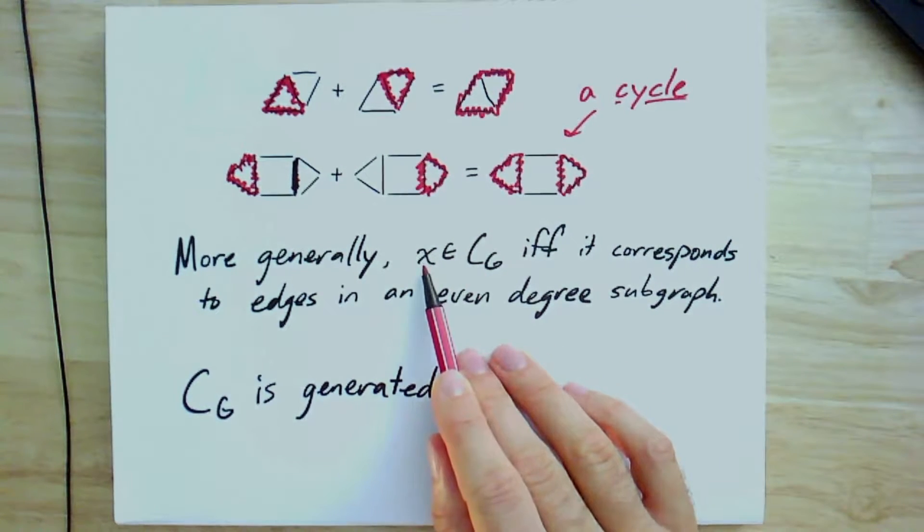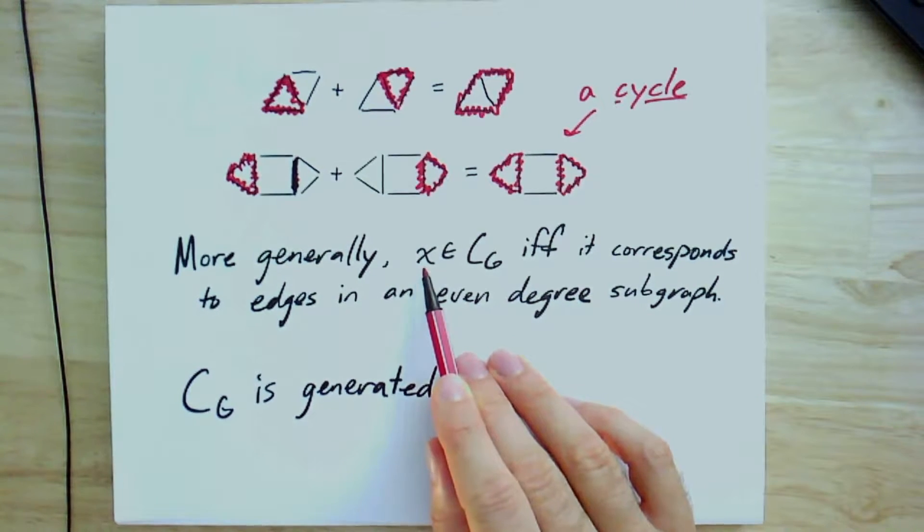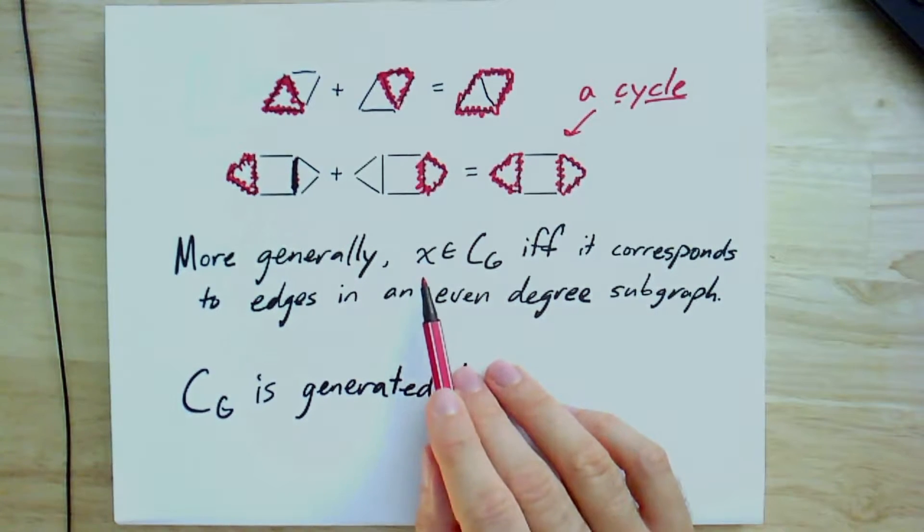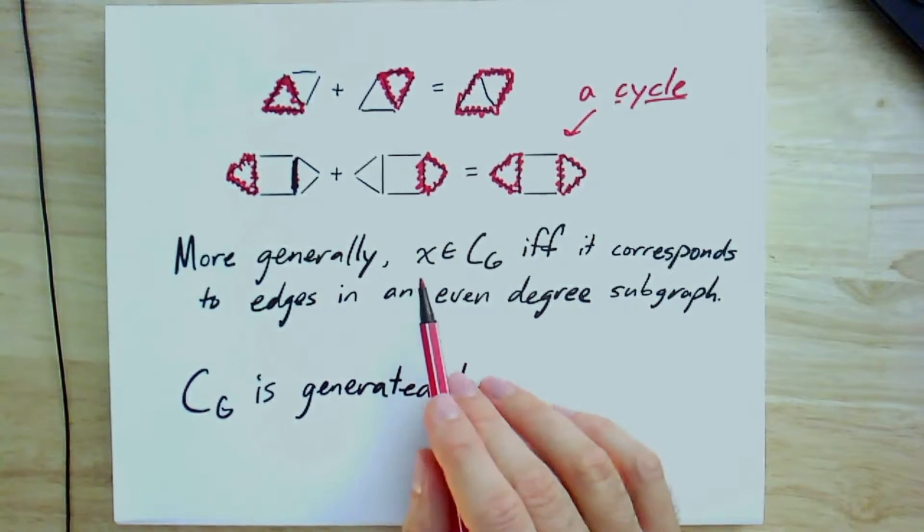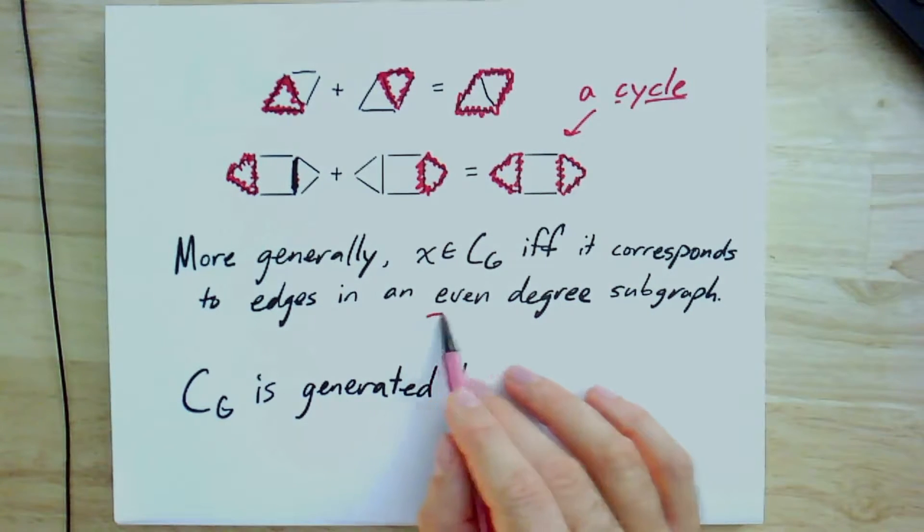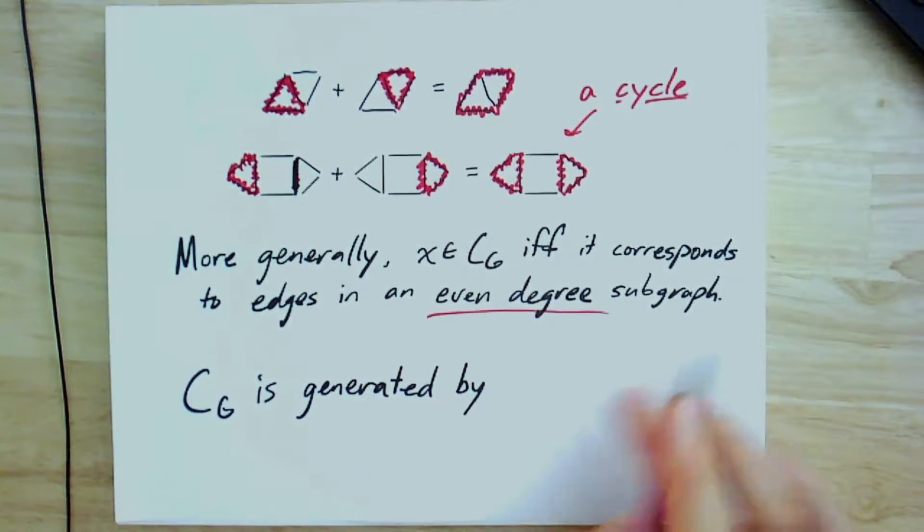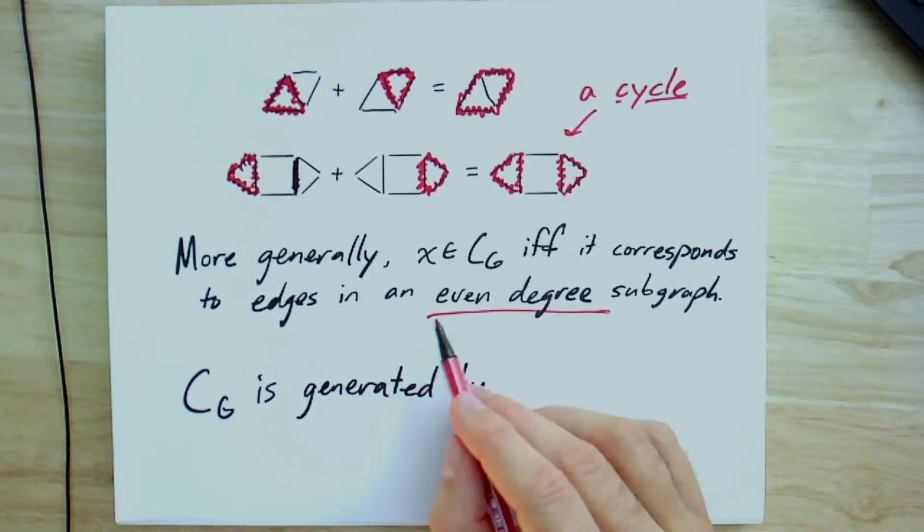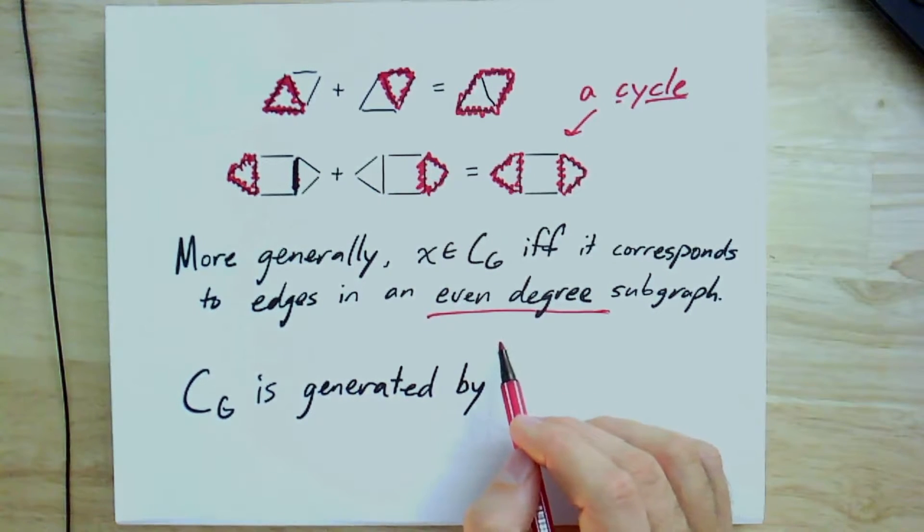And so the elements of this cycle space, that is the vectors x, again, these are subsets of edges, it's a subspace of the edge space, are really those subgraphs, or at least the edges of the subgraphs, that have even degree everywhere. And this even degree is just capturing the idea that every vertex is incident to an even number of edges, so that when we add up all those edges, every one of those vertices will be counted twice.